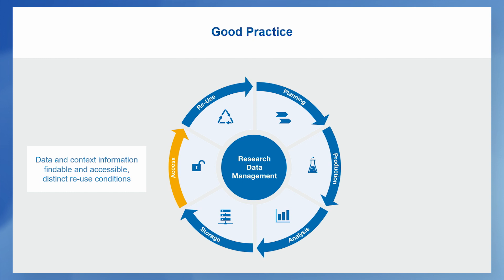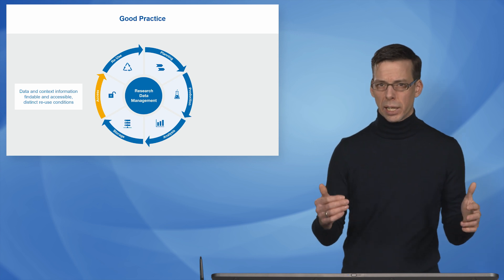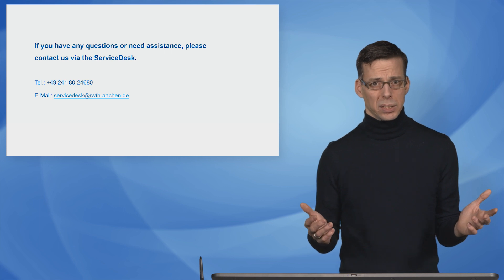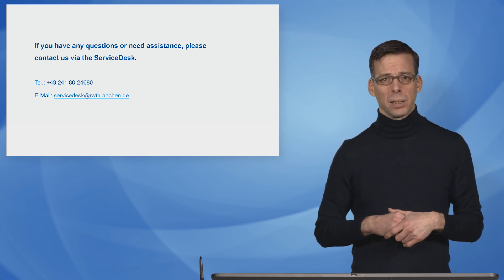Regarding access, you must think about what relevant data others could be interested in, and what context information must be provided so others can understand and reuse the data. Consider whether and how your data should be findable, who can gain access, and the concrete reuse conditions. One solution is to publish the data so that other projects — like Remi's — can reuse and cite it, avoiding duplicate work and improving it when observations are redone in Germany and Great Britain. This concludes the introductory part presenting the squirrel research example, and more videos on specific topics are available at our site.